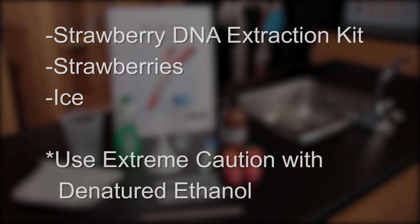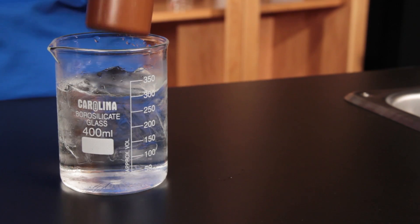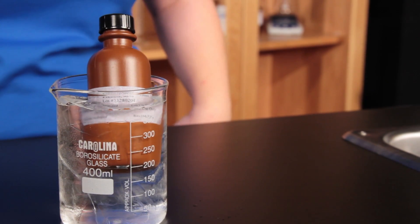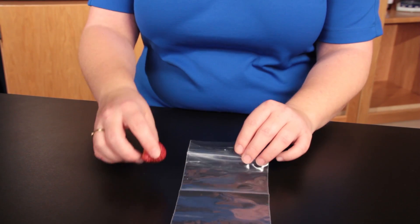For the strawberry DNA extraction, you'll need the strawberry DNA extraction kit, strawberries, and ice. Also remember that ethanol is denatured and doubly dangerous, so follow basic lab safety rules. First, place the ethanol in ice to chill it.